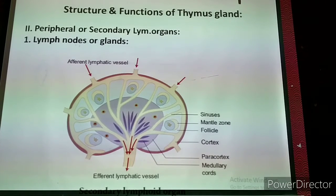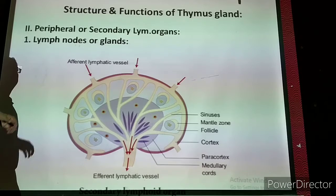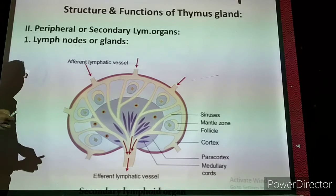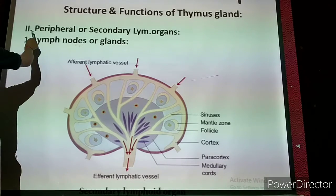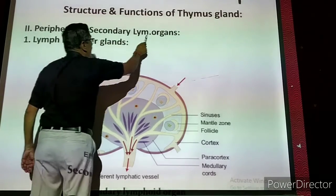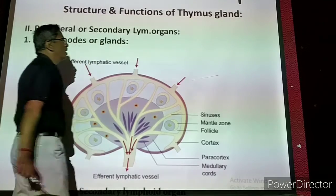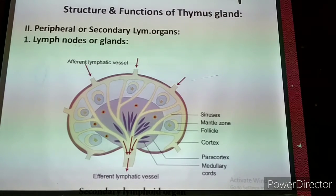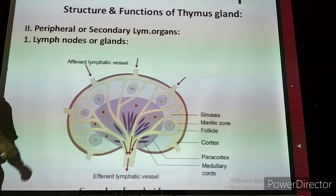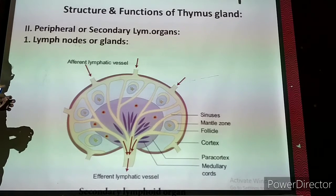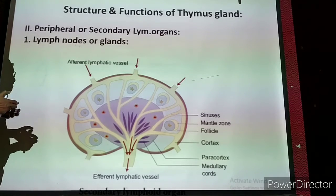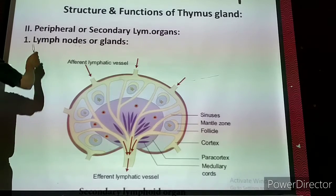Now we are going to study about the next secondary organ — peripheral or secondary lymphoid organs. These are not playing a vital role but they are supporting the immune system.